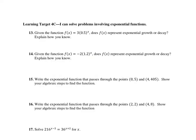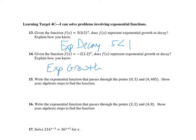Let's move on to four C. We want to solve some problems with exponential functions. Given this function, we want to determine if it's exponential growth or decay — that's determined by the b value. So this is going to be exponential decay because 0.5 is less than one — the b value is less than one. This other one, looking at the b value, is going to be exponential growth. Even though it's going in the negative direction, we still call this exponential growth because 1.2, the b value, is greater than one.